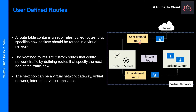UDRs control network traffic by defining a route that specifies the next hop of the traffic flow. This hop can be a virtual network gateway, virtual network, internet, or virtual appliance. Please note that each Routes table can be associated to multiple subnets, but a subnet can only be associated to a single Routes table. There are no additional charges for creating Routes tables in Microsoft Azure.